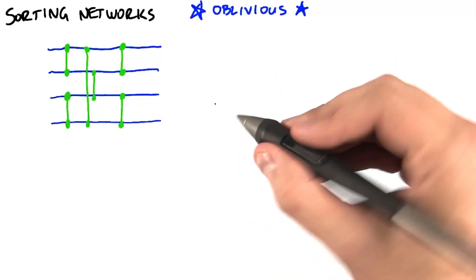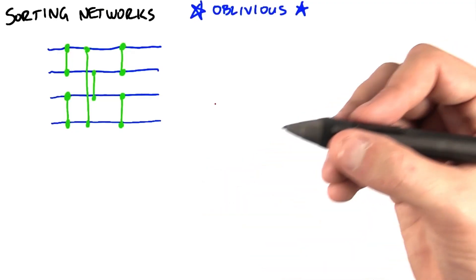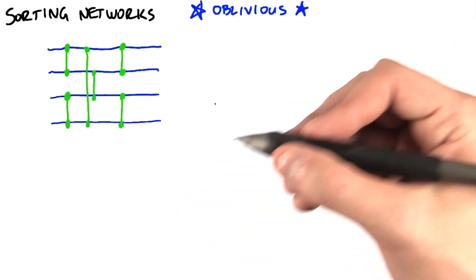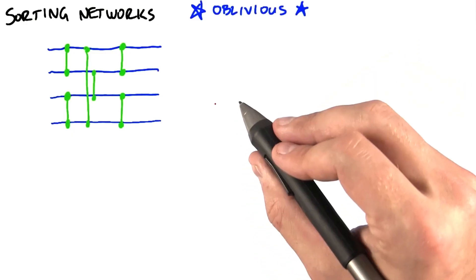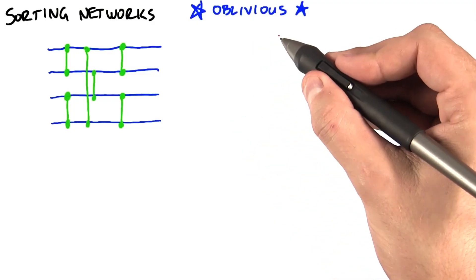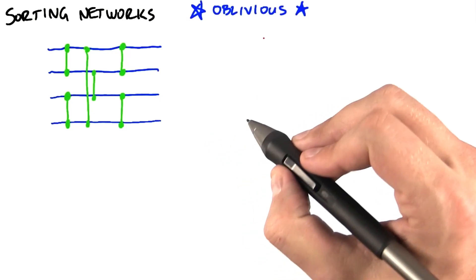Now we're going to take a completely different approach to sorting. Generally, most sorting algorithms are data dependent. Based on the values of the data, we choose to do different things, and if we sort two different sequences, we probably take a different path through the code. Instead, now we're going to consider a set of sorting algorithms that we call Oblivious. No matter what input we choose, the sorting algorithm proceeds the exact same way.